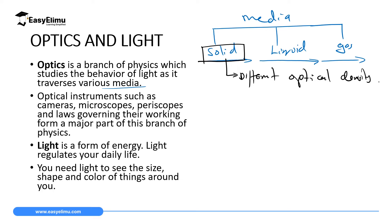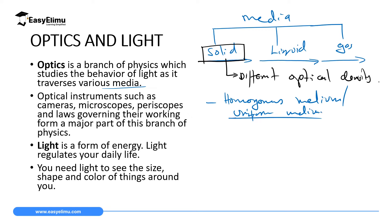Light will behave differently when traveling in materials with different optical density. But for the interest of this topic, we will be focusing on light traveling in a homogeneous or uniform medium — one with a uniform optical density. In optics, we also focus on instruments that use the idea of optics, like cameras. In this topic of rectilinear propagation of light, we will focus on one instrument called the pinhole camera.